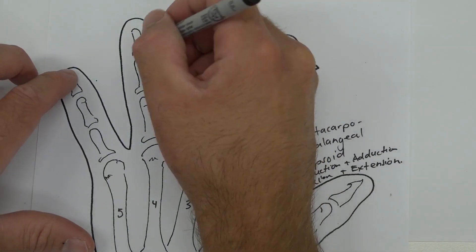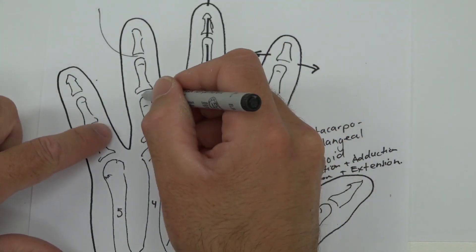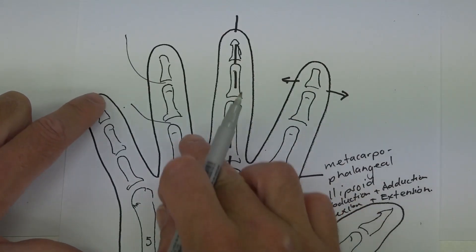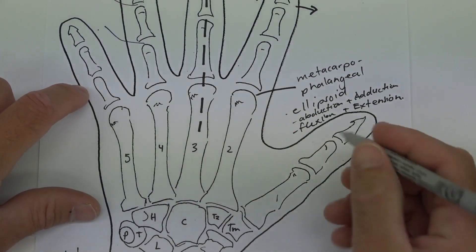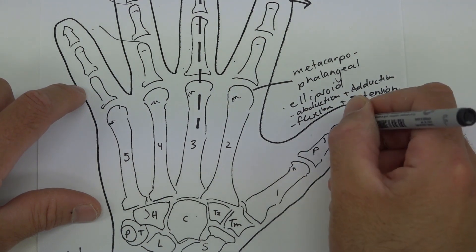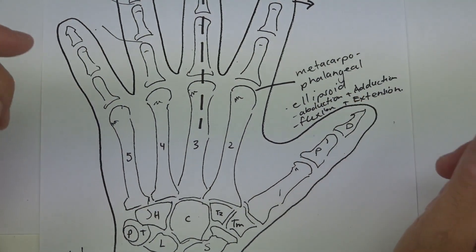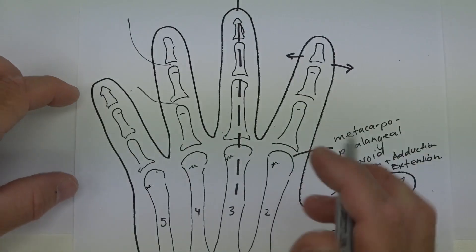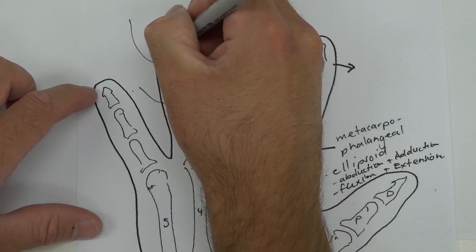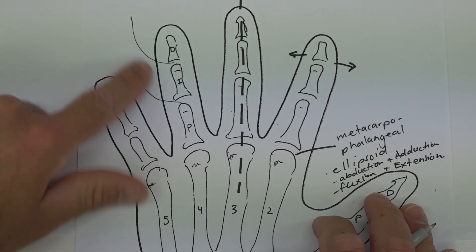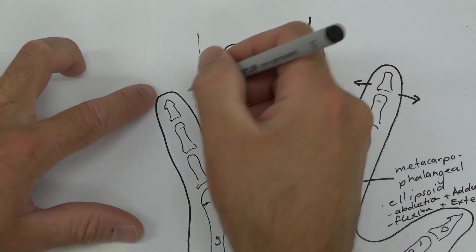Then we have interphalangeal joints—between your phalanges. On each of your fingers you have three phalanges, but only two phalanges in your thumb. This one would be the proximal phalange of the thumb and the distal phalange of the thumb. Here we have a proximal one, an intermediate or middle, and a distal.